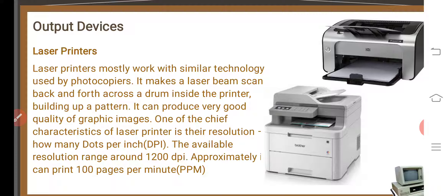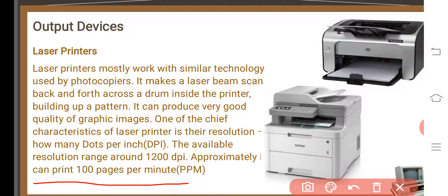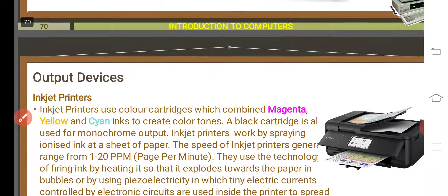The laser printer uses technology similar to photocopiers. It makes a laser beam scan back and forth across a drum inside the printer, building up a pattern. We place paper in the printer, select how many copies to print from the system, and take the printout. We can print graphical images, black and white, or color output. A laser printer can print approximately 100 pages per minute.